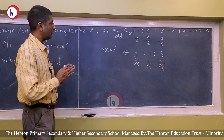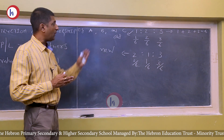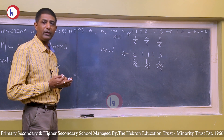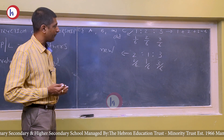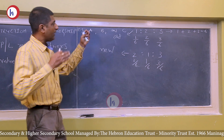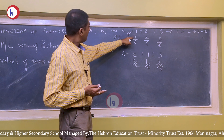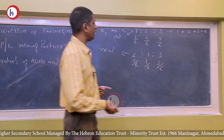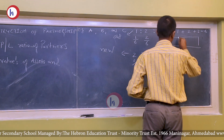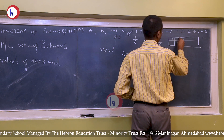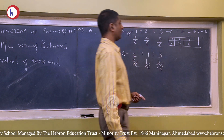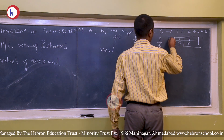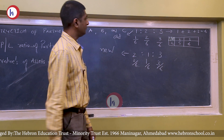Now let us find out who is at loss and who is at gain — that means who has made a sacrifice and who has obtained a benefit. With a diagram: suppose the total profit is divided into six parts. In the old ratio, A was getting one part. In the new ratio, A is getting two parts out of six. So A has gained by the change in profit and loss ratio.